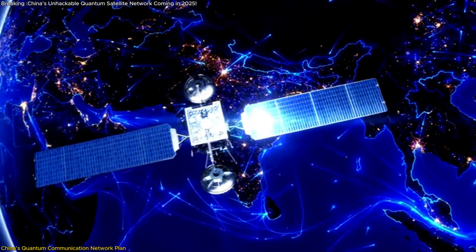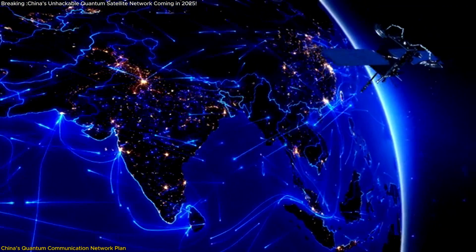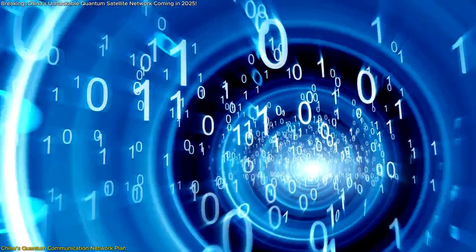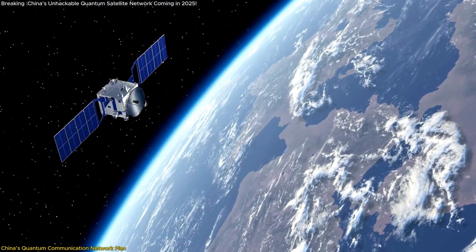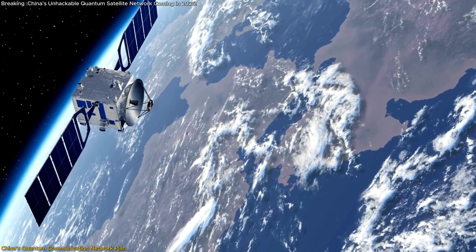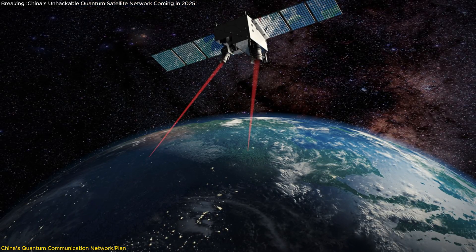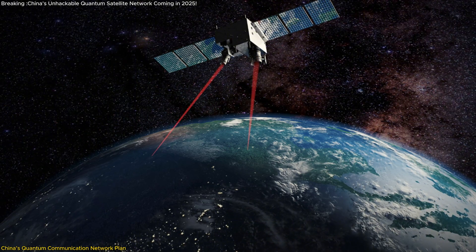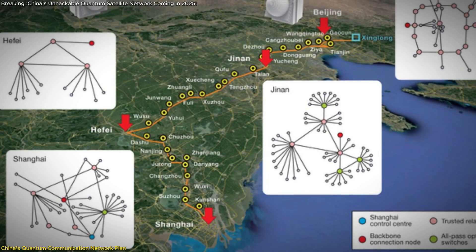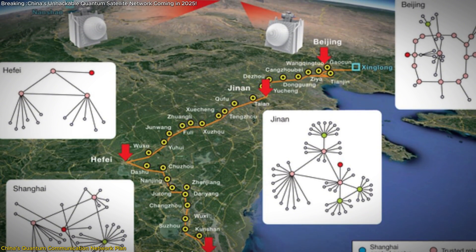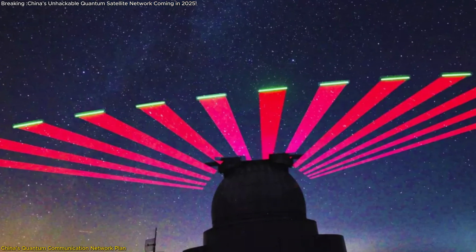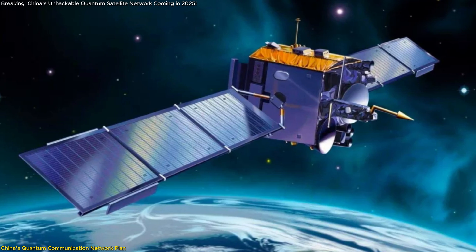This layered network approach will allow China to perform sophisticated quantum communication experiments, such as quantum teleportation and more advanced forms of QKD. Additionally, the satellites will feature highly advanced telescopes and photon transmission systems that have been miniaturized for space use. One such advancement is a 600 mm diameter telescope, which is crucial for transmitting and receiving quantum keys. This infrastructure, when combined with the existing 2,000 km long Beijing-Shanghai quantum communication backbone, will create a hybrid system that covers both ground and space, leading to a more resilient and extensive network.